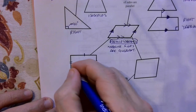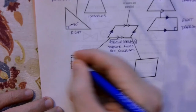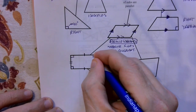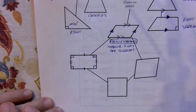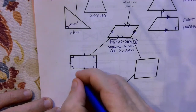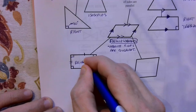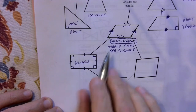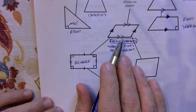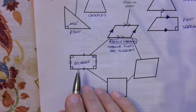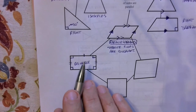What makes the next one special is it has four right angles. So this shape has four right angles, with opposite sides parallel and opposite sides equal — and this is called a rectangle. A rectangle is a parallelogram, but a parallelogram that also has four right angles.